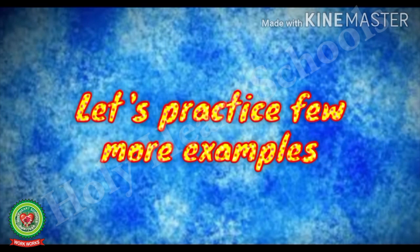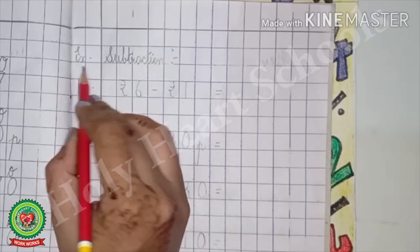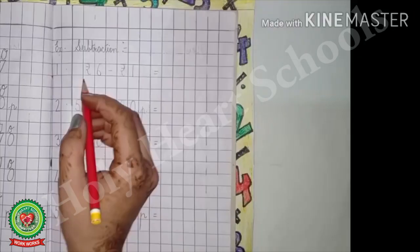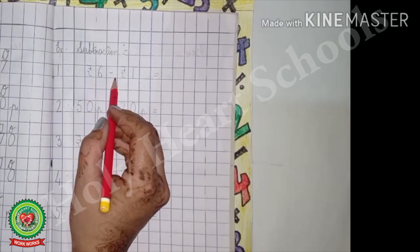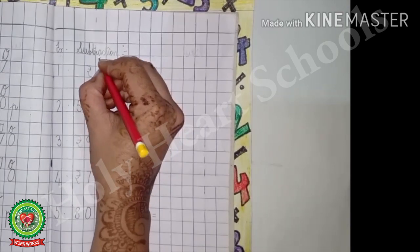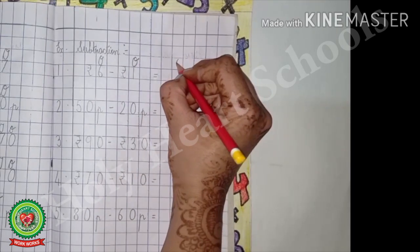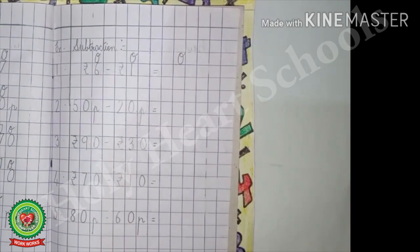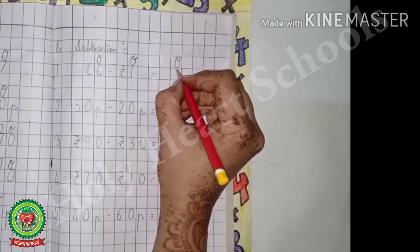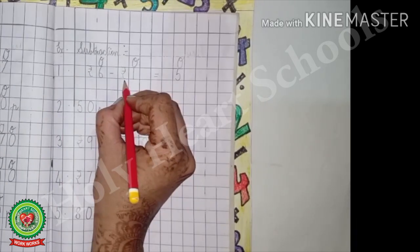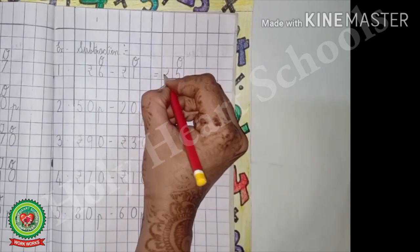Now let us practice a few more examples. Exercise: subtraction. Number 1: rupees 6 minus rupee 1. Write down the place value chart — 1s. In the answer, again write the place value chart. 6 minus 1, the answer is 5 — write 5 under 1s. With that, write the unit, which is rupees.